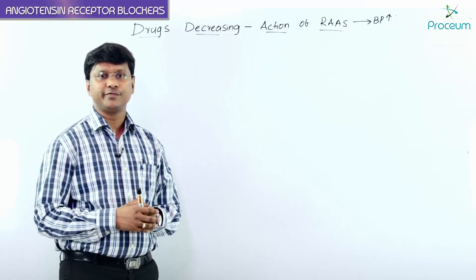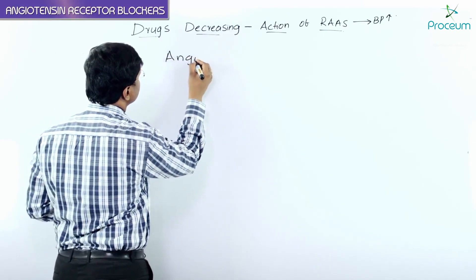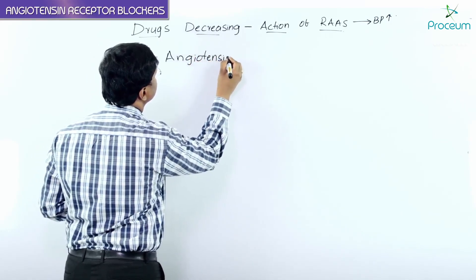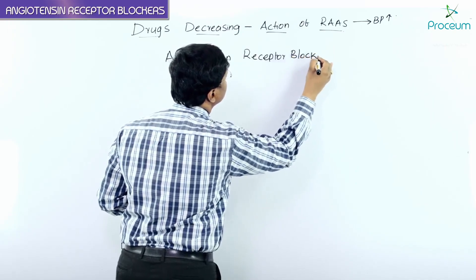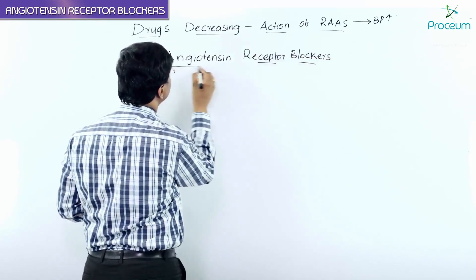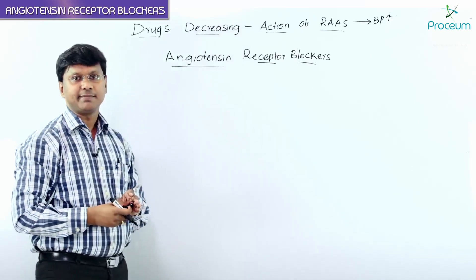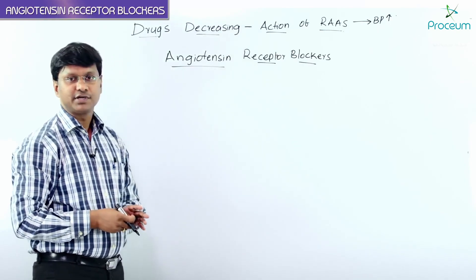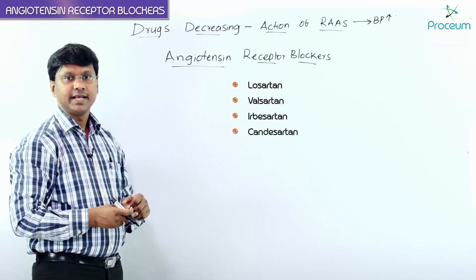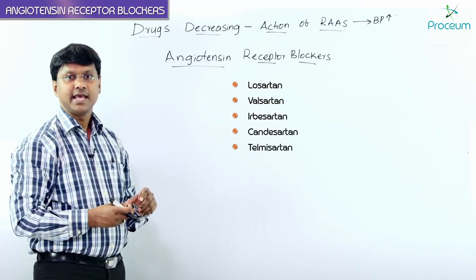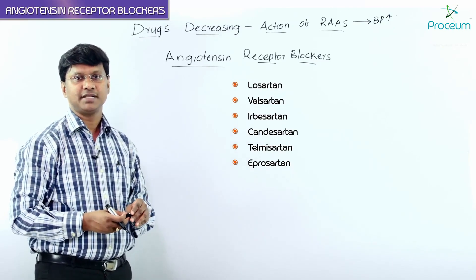Let me discuss another group of drugs which antagonize the RAS pathway — that includes Angiotensin Receptor Blockers, or ARBs. The drugs included in this group are Losartan, Valsartan, Irbesartan, Candesartan, Telmisartan, and Eprosartan. These are the drugs included in the angiotensin receptor blockers.